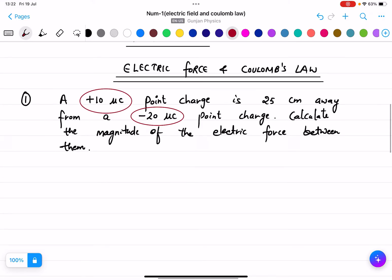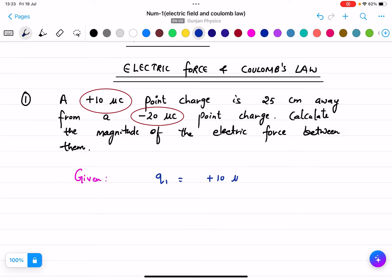First of all, we will write what is given to us. It is q₁ = +10 microcoulombs, q₂ = -20 microcoulombs.